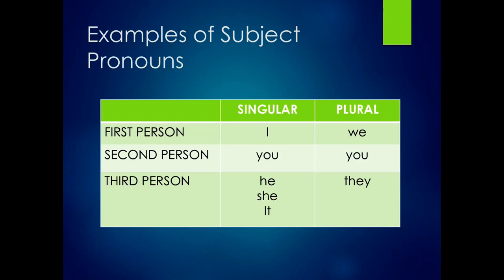For first person plural, we use the pronoun we. For second person singular and plural, we use the pronoun you. For third person singular, we use the pronoun he if referring to a male, she if referring to a female, and it if referring to a thing. For third person plural, we use the pronoun they.